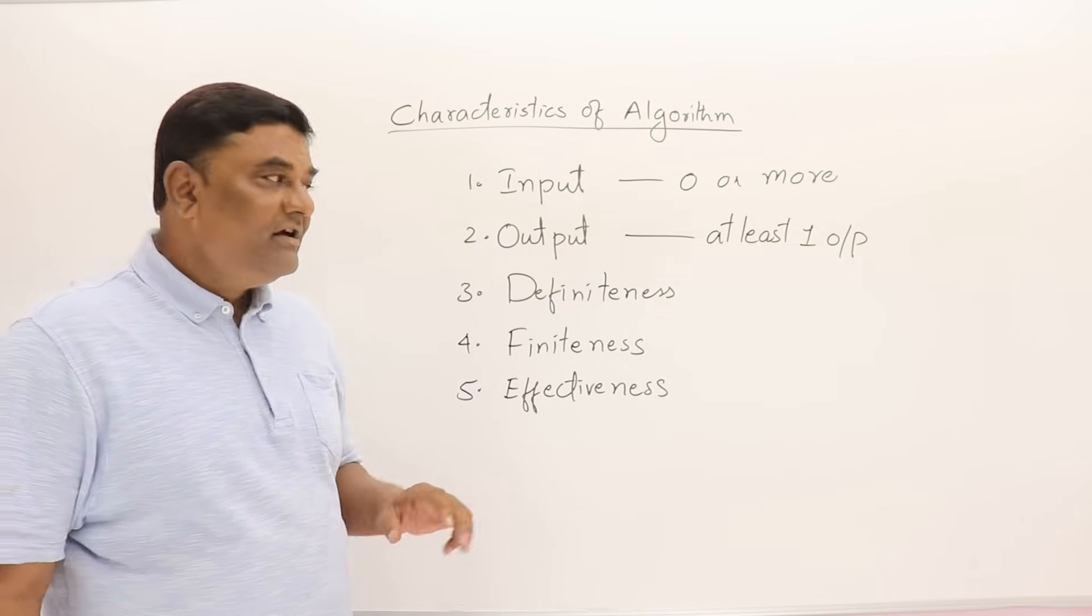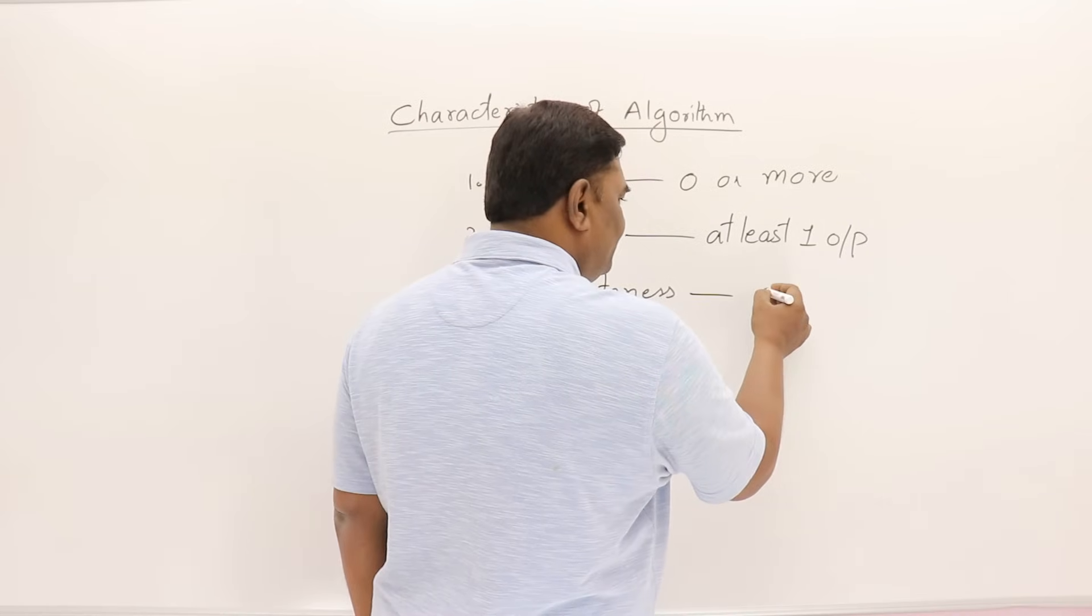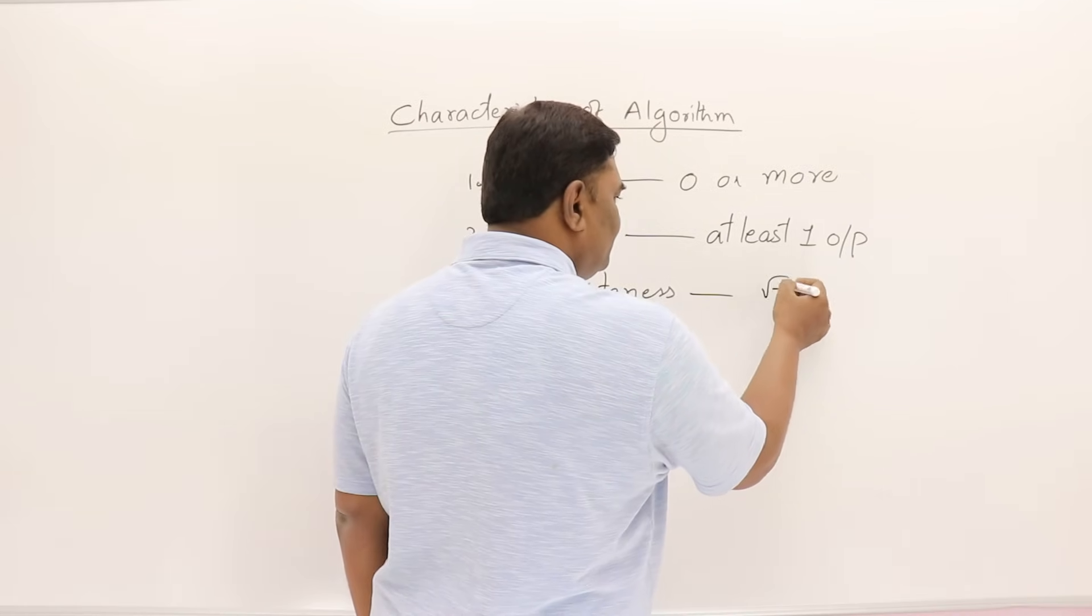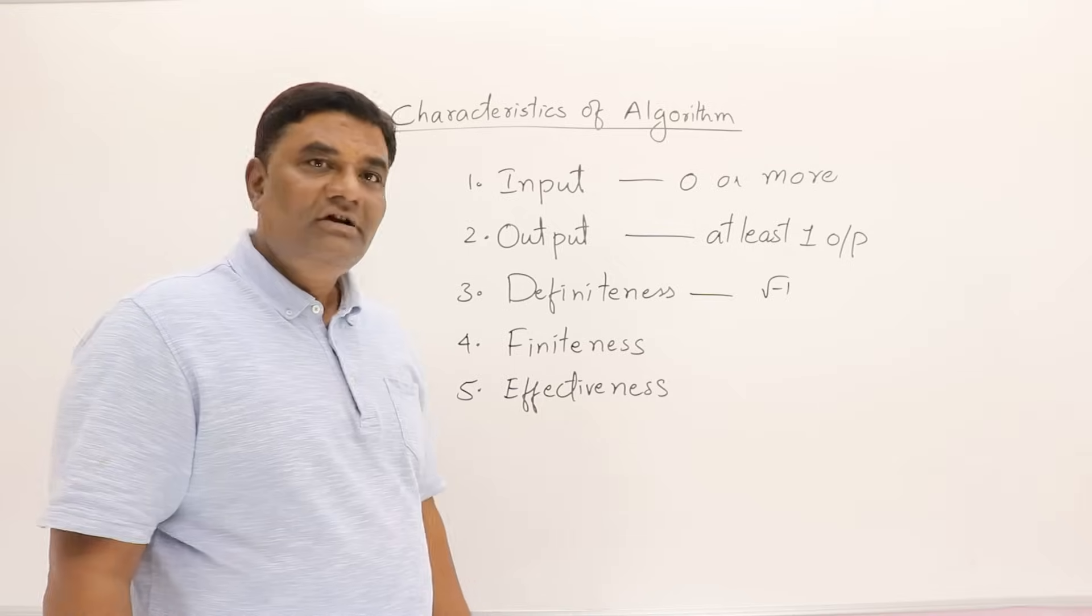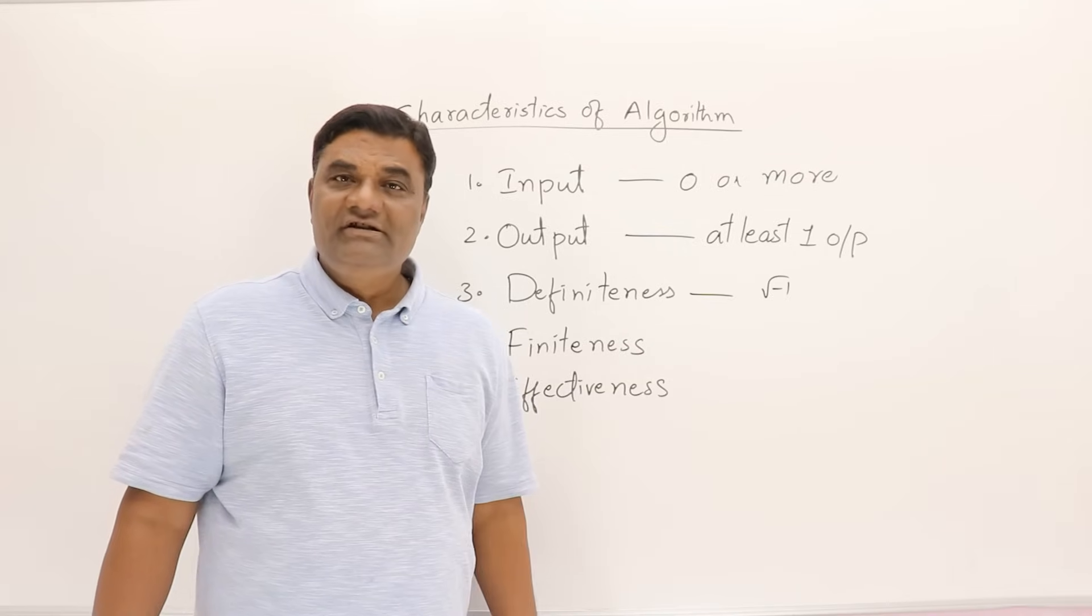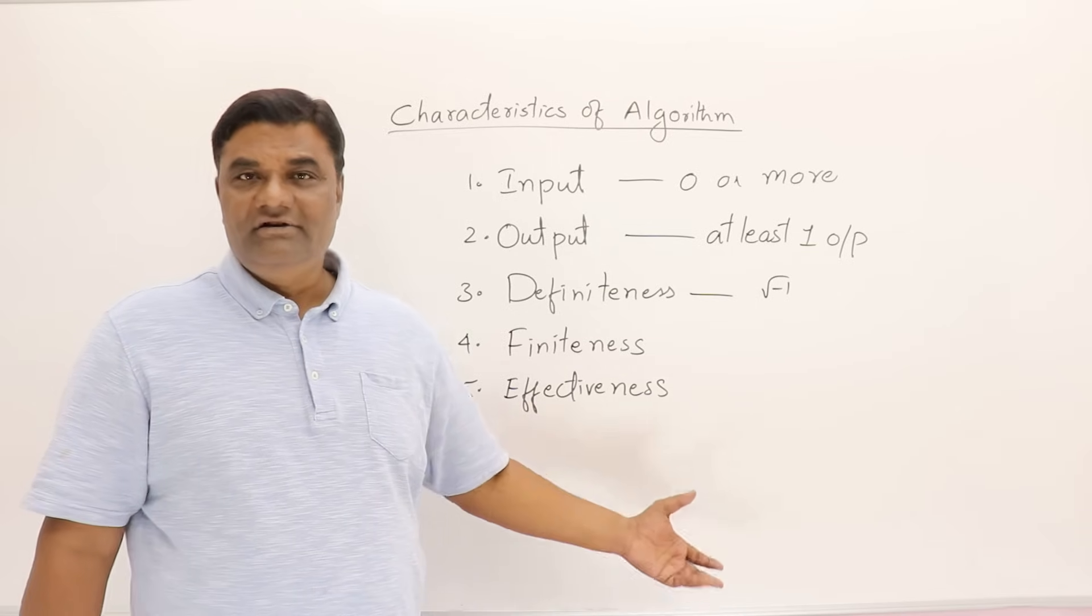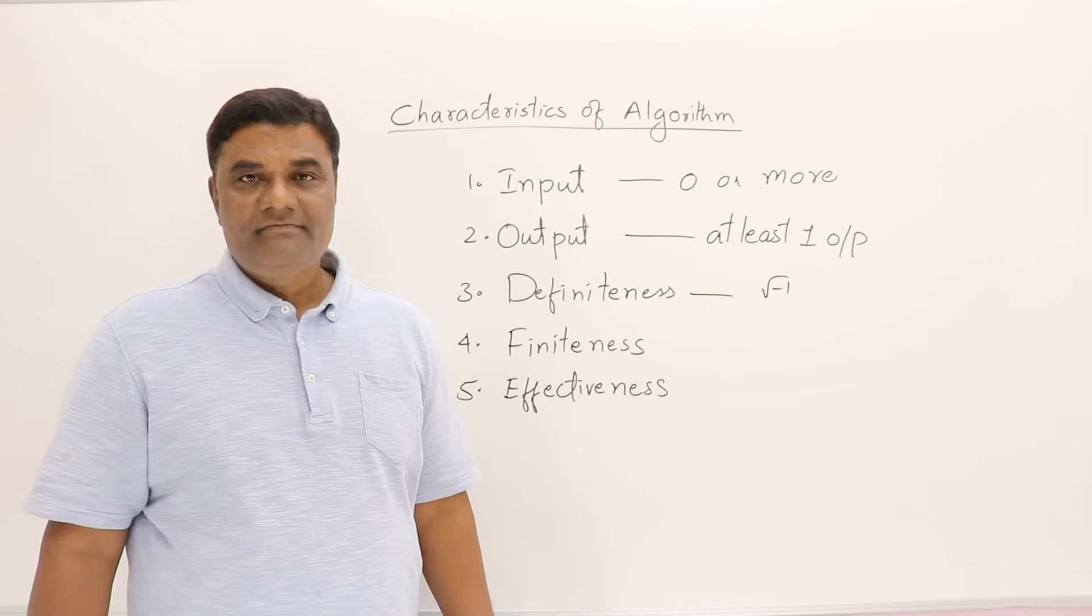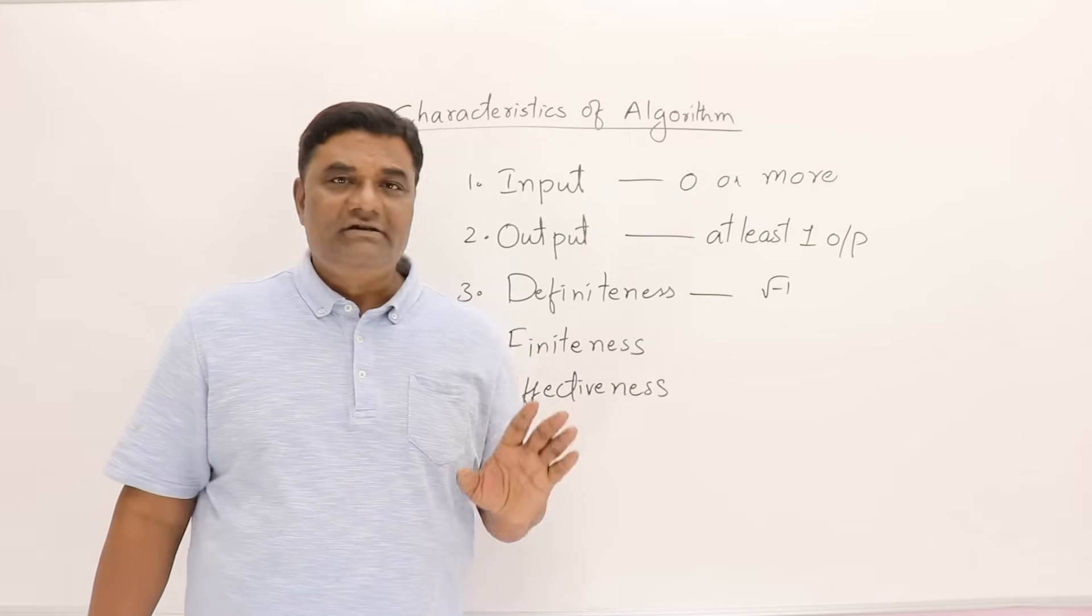For definiteness, you cannot use values like, let's suppose, root minus one. It's an unknown value—an imaginary number. So you cannot treat it as a real number and write it in the algorithm. This is an example I'm giving you. So every statement must give clear meaning, only one meaning.